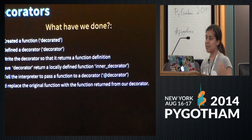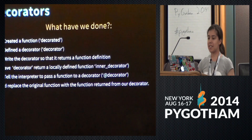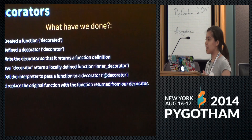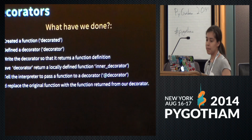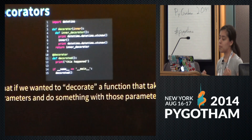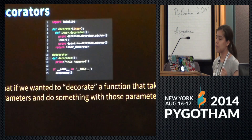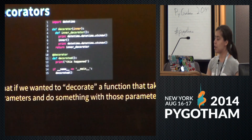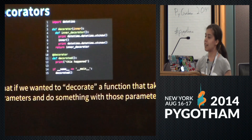So let's recap what we just did. We created a function, we defined a decorator, we wrote the decorator such that it returns a function definition, and then we told the interpreter to pass a function to the decorator and replace that original function with the function definition returned from that decorator.